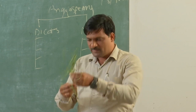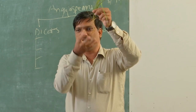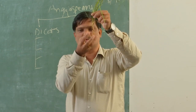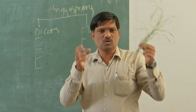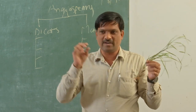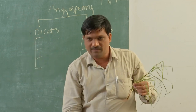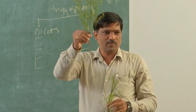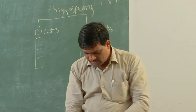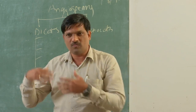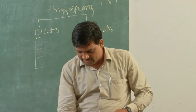Here there is no tap root — only fibrous roots, or adventitious roots. So if adventitious roots are present, simply say monocot; if a tap root is present, simply say dicot. Now let's go to another key character — the leaf.